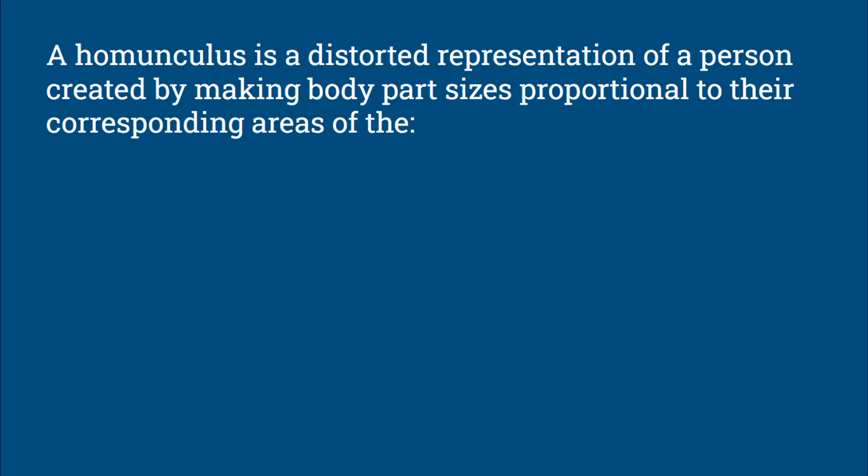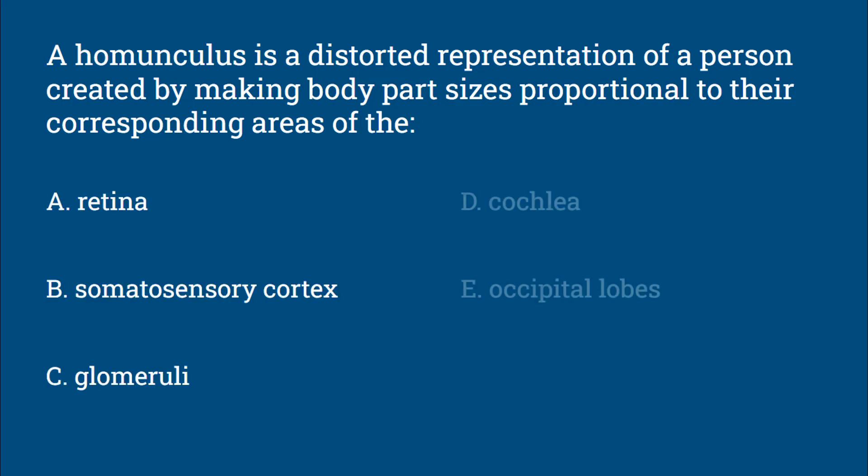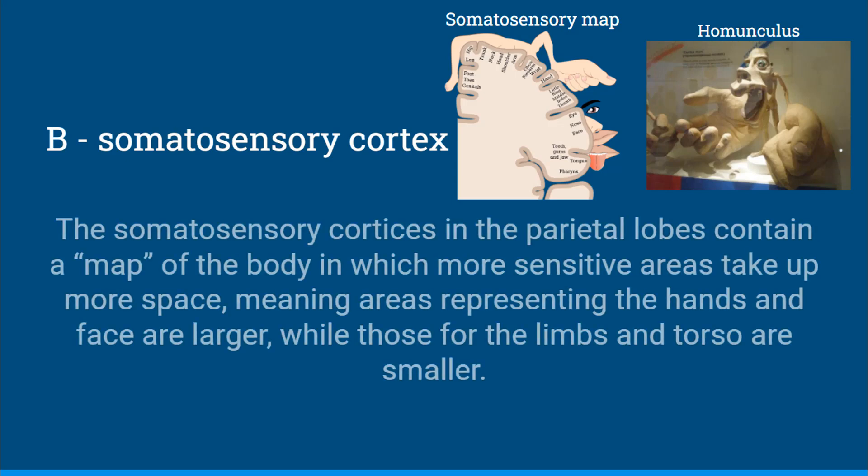A homunculus is a distorted representation of a person created by making body part sizes proportional to their corresponding areas of the retina, somatosensory cortex, glomeruli, cochlea, or occipital lobes. The answer is B, the somatosensory cortex. The somatosensory cortices in the parietal lobes contain a map of the body in which more sensitive areas take up more space. This means areas representing the hands and face are larger while those for the limbs and torso are smaller, and a person created based on that — this little person, or homunculus — would look quite strange.